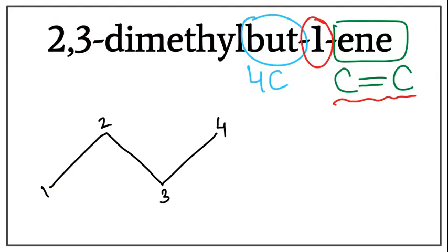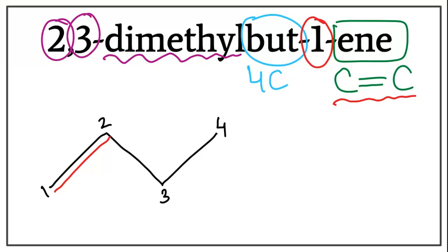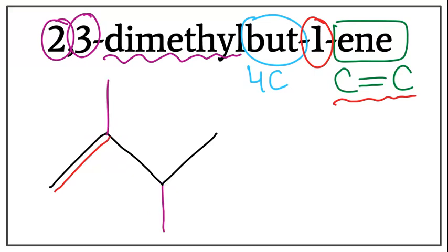Let's draw the double bond between the first and the second carbon. We also have a dimethyl attached to this carbon chain, meaning that there are two methyls attached — one on the second carbon and one on the third carbon. So let's get rid of these numbers and attach the methyl on the second carbon and a methyl on the third carbon. This is the structure for 2,3-dimethyl-bute-1-ene, or 2,3-dimethyl-butene.